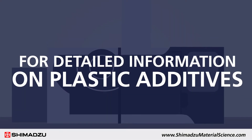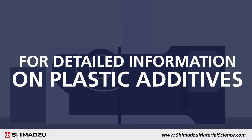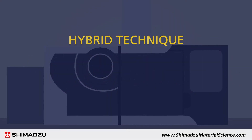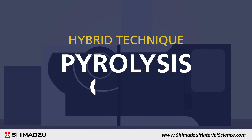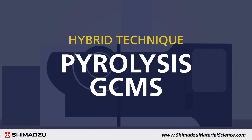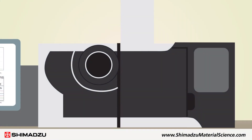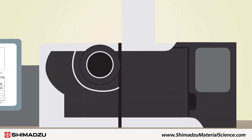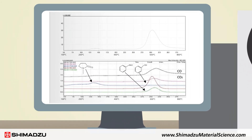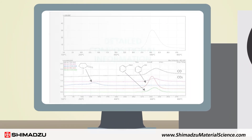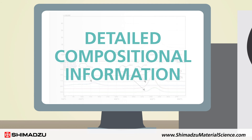For detailed information on plastic additives, you can use a hybrid technique called pyrolysis GCMS. In this method, samples are pyrolyzed and the evolved gases are analyzed in a gas chromatograph fitted with a mass spectrometer to provide detailed compositional information.